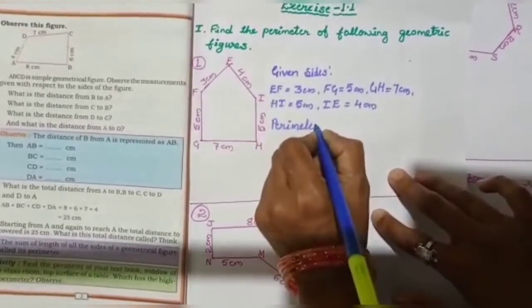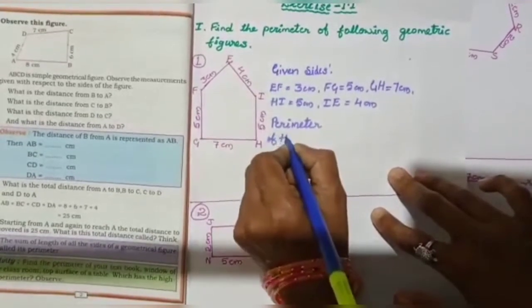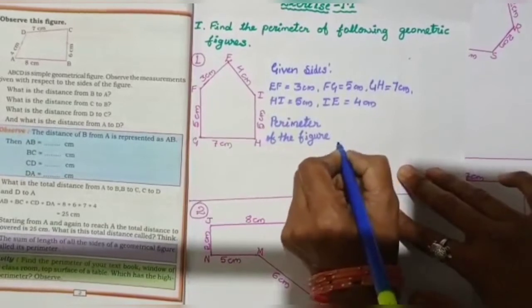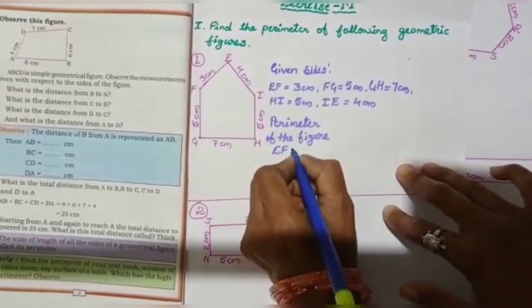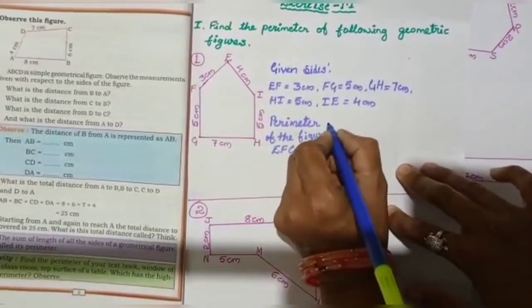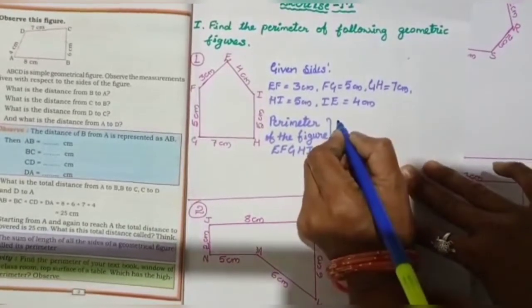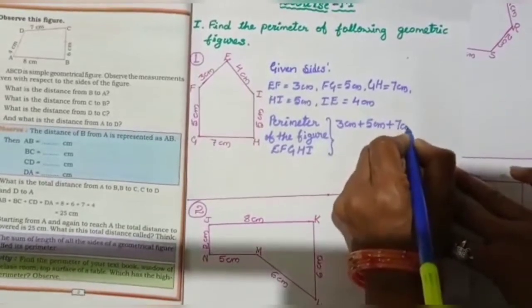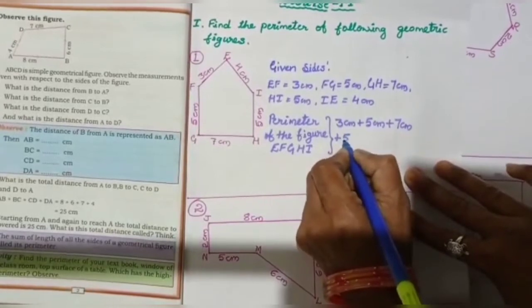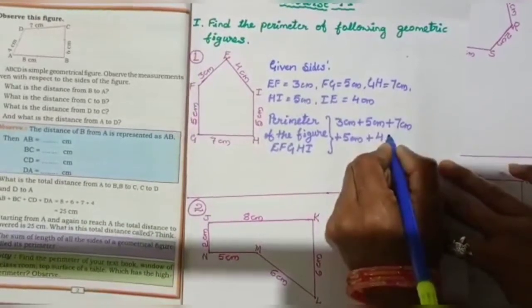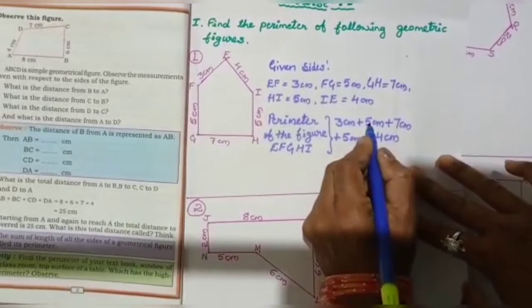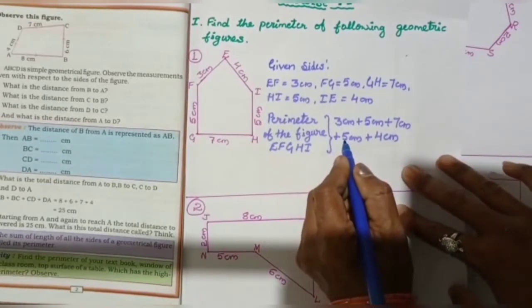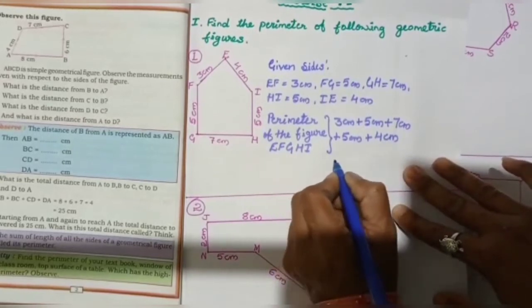Perimeter of the figure EFGHI. Now, EF 3 cm plus FG 5 cm plus GH 7 cm plus HI 5 cm plus IE 4 cm. Total, you add it. 3 plus 5, 8 cm. 8 plus 7, 15 cm. 15 plus 5, 20 cm. 20 plus 4 cm, 24 cm.